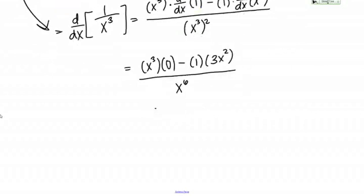So let's continue to simplify this. So x cubed times 0 is just 0. So on the top, I'm left with negative 3x squared. And on the bottom, I'm left with x to the 6th.